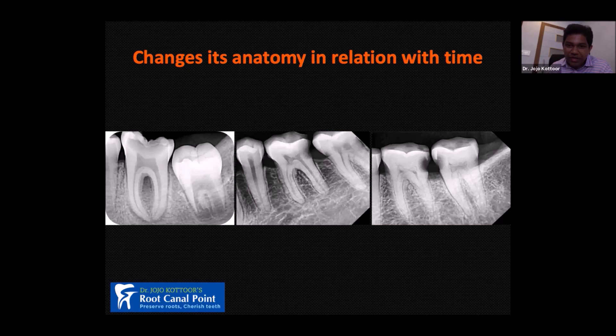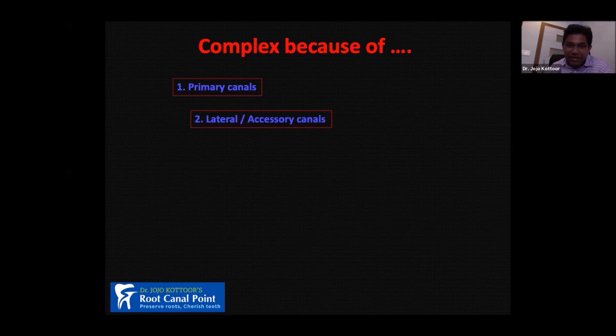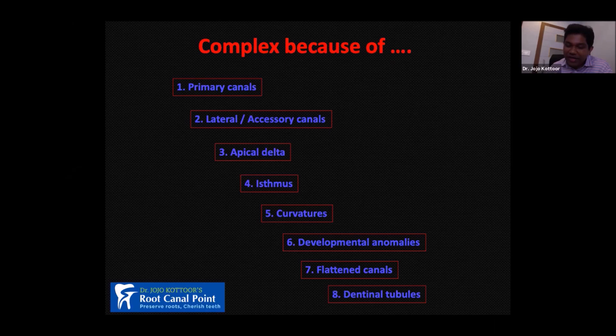The second characteristic is complexity. Root canal anatomy is complex because it has primary canals, lateral canals, apical delta, isthmus, curvatures, developmental anomalies, flattened canals, and dentinal tubules. All eight of these factors make root canal anatomy complex.